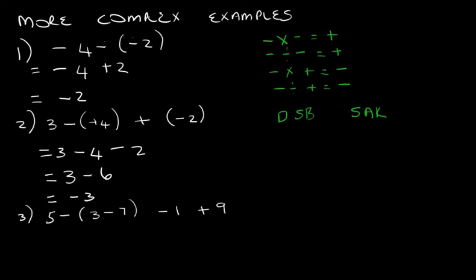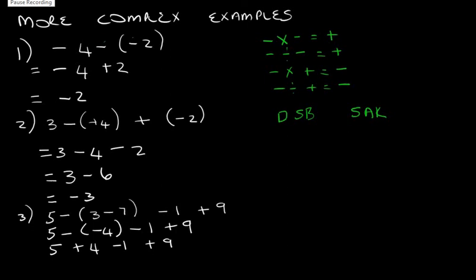Let's look at our final complex example: 5 minus (3 minus 7) minus 1 plus 9. We need to look at our brackets first. 3 minus 7: the signs are different, so we subtract and keep the sign of the bigger number — that bracket simplifies to negative 4. That negative 4 remains in a bracket because there's a negative in front of it which we need to simplify further. A negative times a negative is a positive, leaving us with 5 plus 4 minus 1 plus 9. We group the positives and negatives: that gives us 18 minus 1, which is equal to 17.